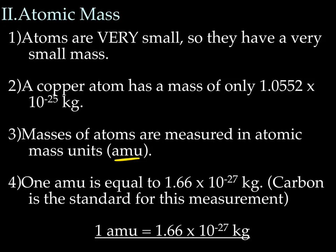1 AMU is equal to 1.66 times 10 to the negative 27 kilograms, and the carbon atom is the standard for this measurement. So we now have a new equality: 1 AMU equals 1.66 times 10 to the negative 27 kilograms. Why don't you pause at this moment and write that equality on your unit conversion table in the mass area.